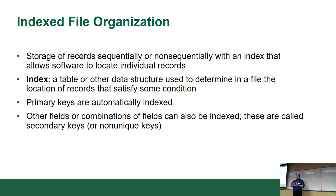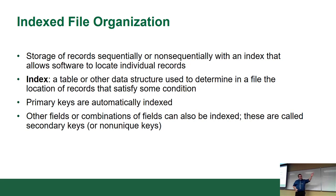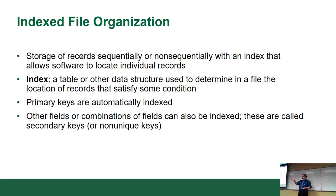If you have 25,000 rows it'll happen fast, but if you have 25,000,000 rows it's going to take a while because it's got to read every single row. What indexes do is allow you to speed up the search by creating special structures that it uses to look things up. An index is a data structure that determines exactly where things are.